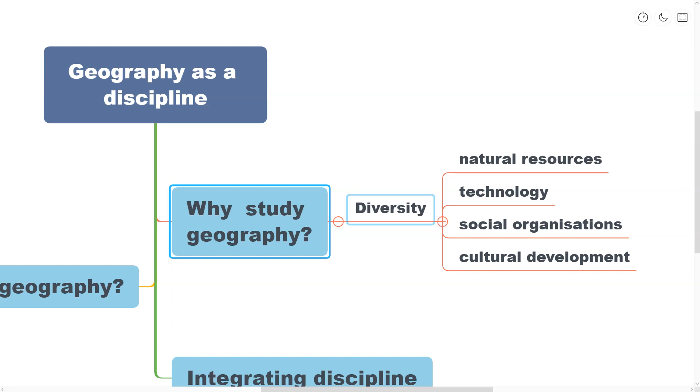There is quite a bit of diversity or variations in the natural resource space, the technological conditions, the technological development, and the adaptation and modification with the physical environment, social organizations, and the cultural development. As a student of geography, you should be curious to know all the phenomena which vary over space.